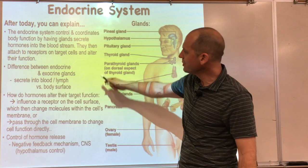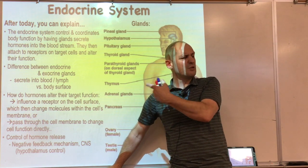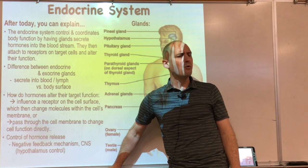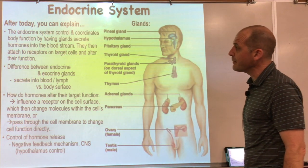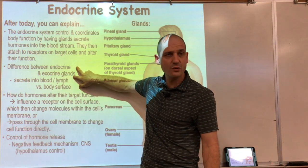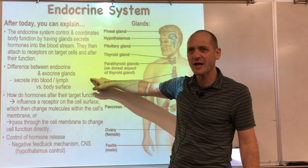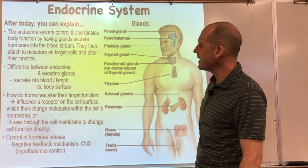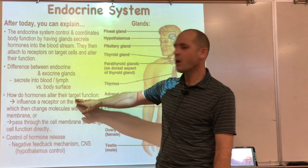The endocrine system is very similar to the nervous system. Both systems control body function. We'll differentiate between endocrine glands and exocrine glands, then look at how different hormones work on different body functions and what they influence.